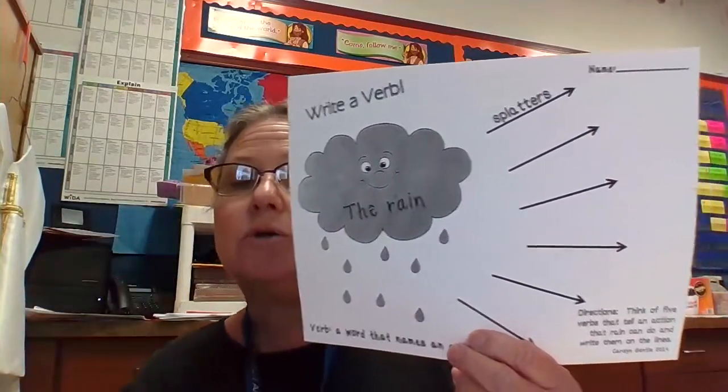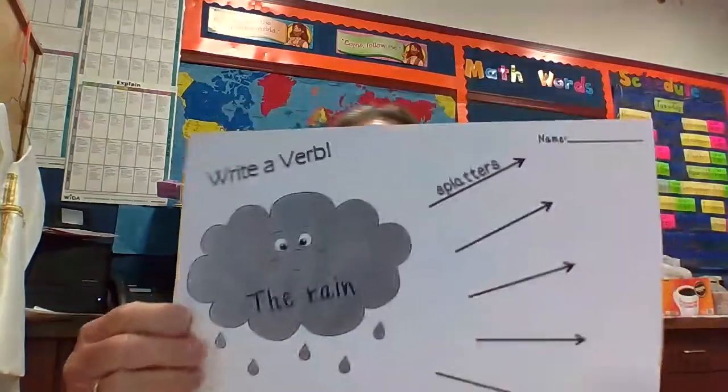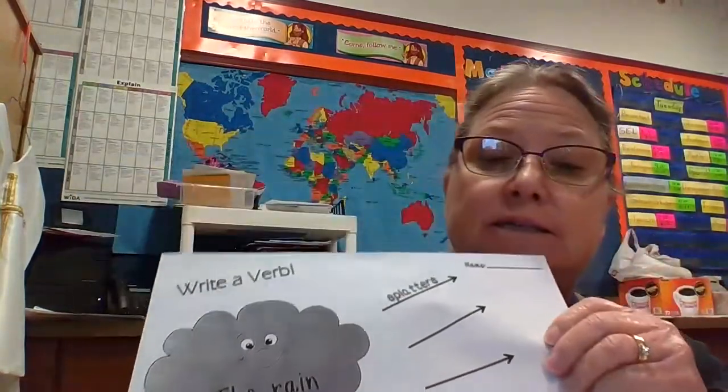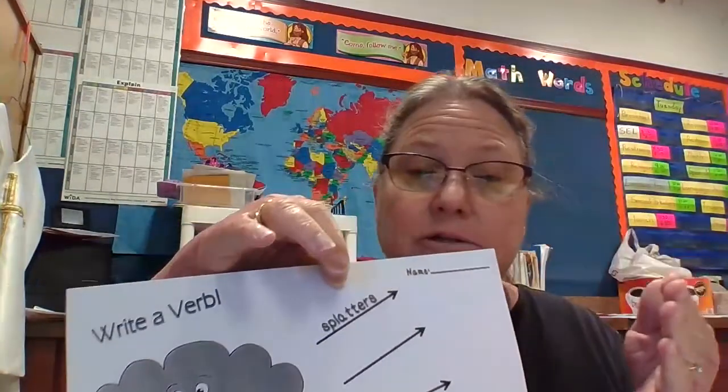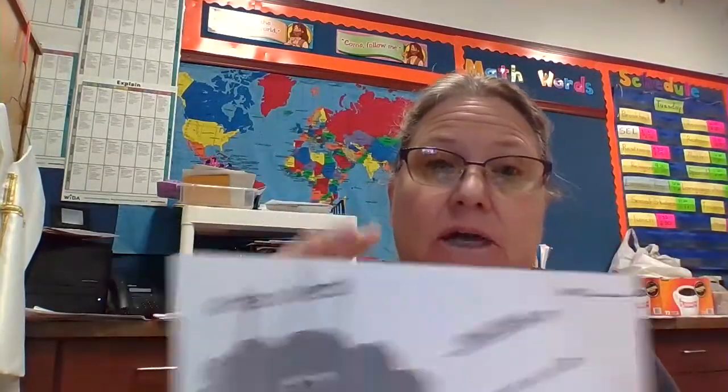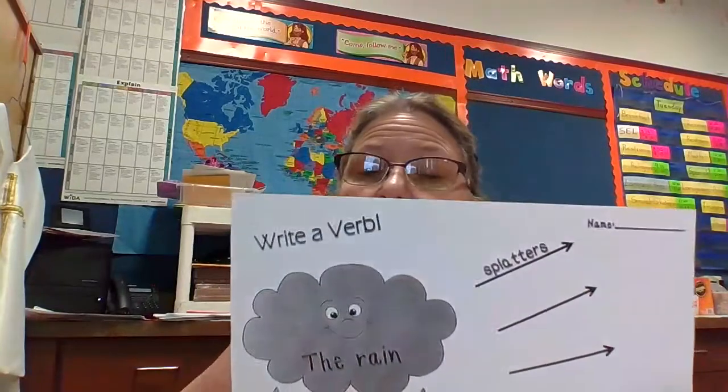So you're going to make sentences on the arrows like they did here. So if we read the sentence that they made, it says the rain splatters. Splatters is an action. If you drop something it splatters. If you drop an egg, it just cracks and it goes everywhere, it splatters. If you dump water, it splatters. It runs out, it moves out and makes a big mess. That splatters. The rain splatters.